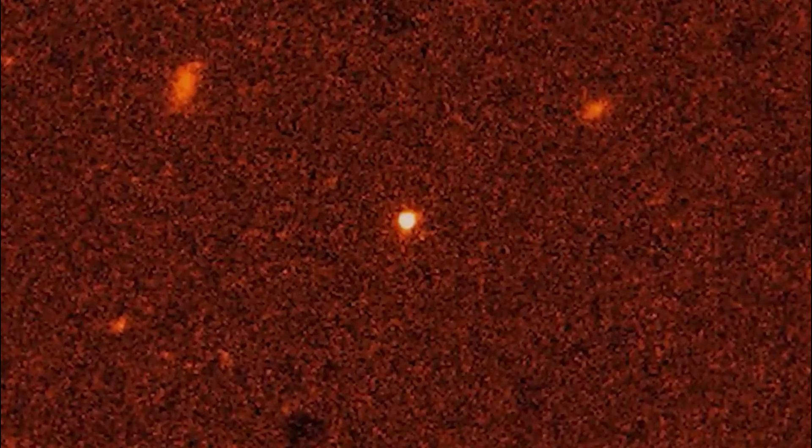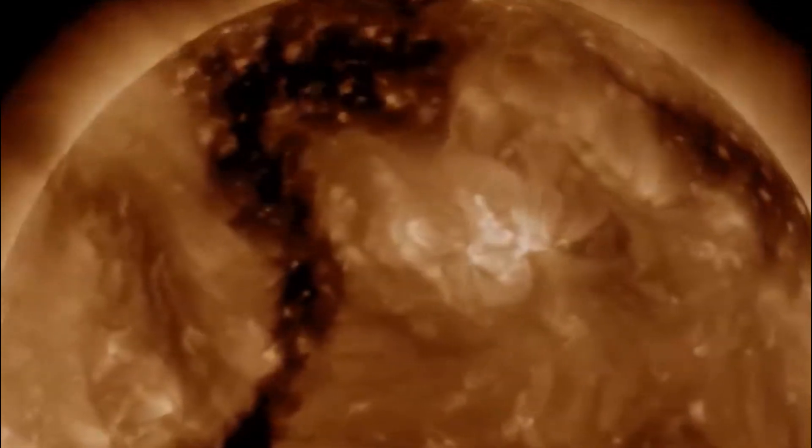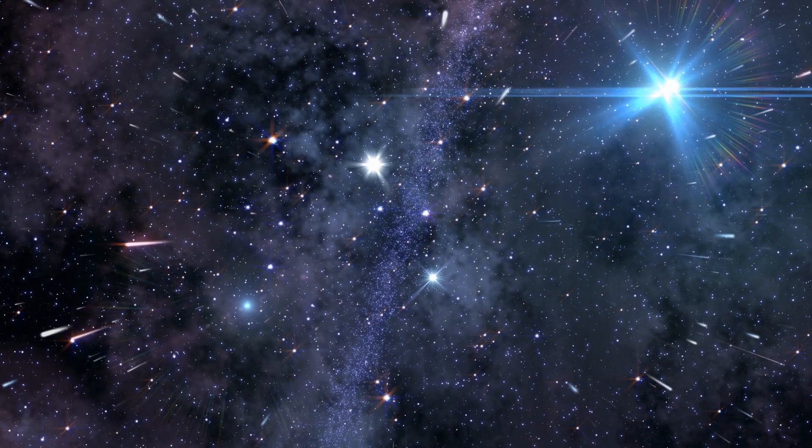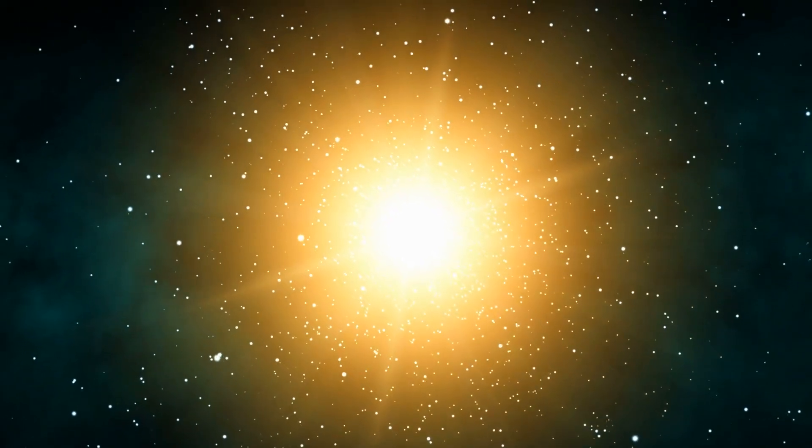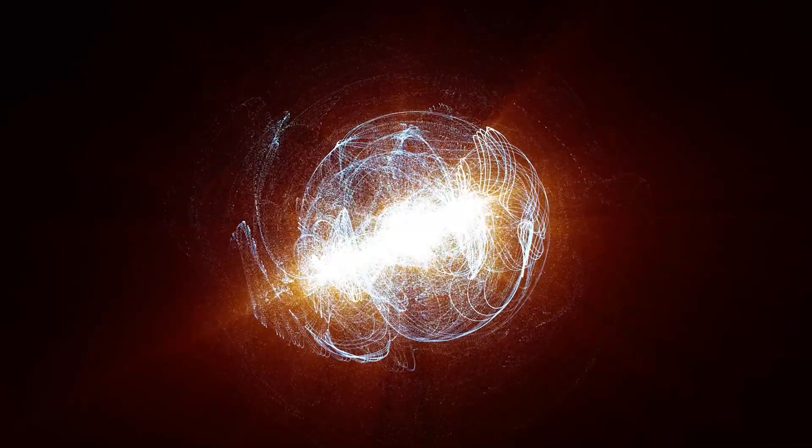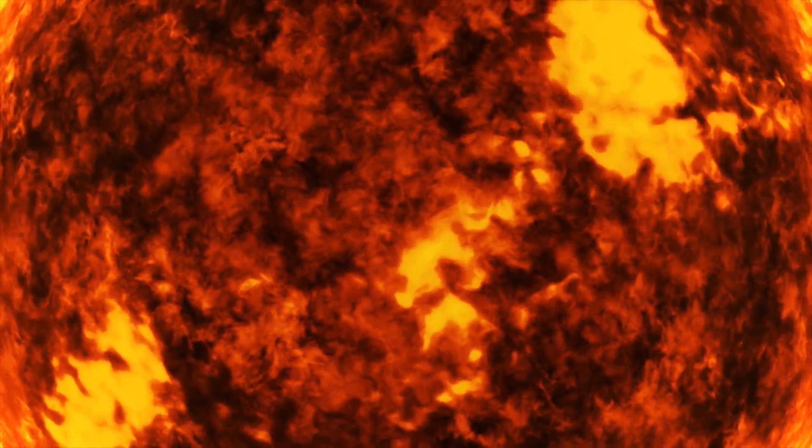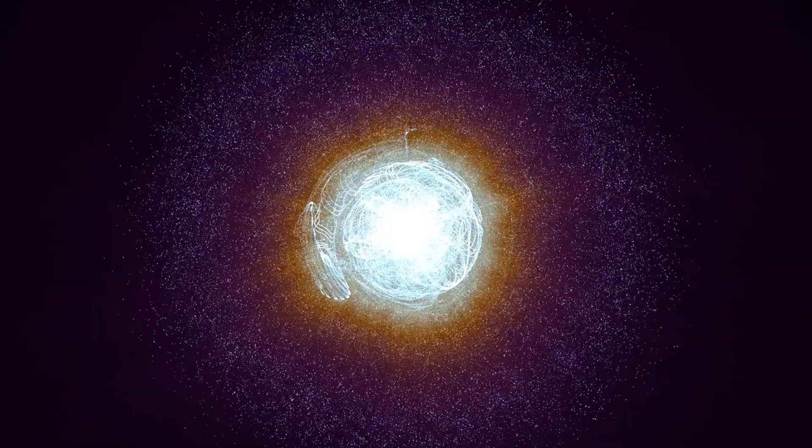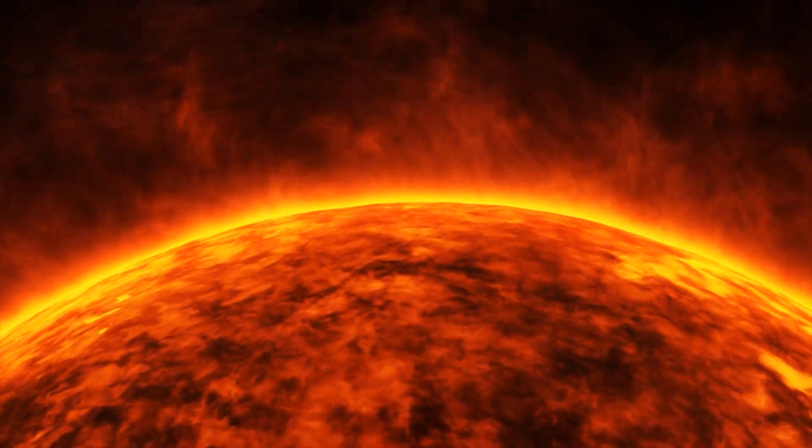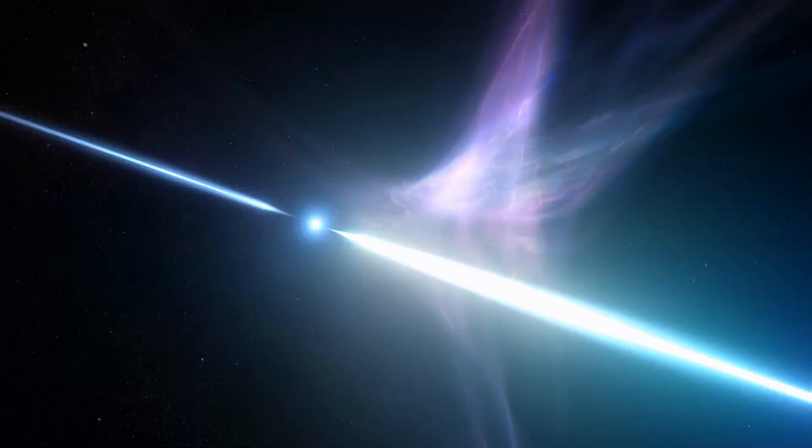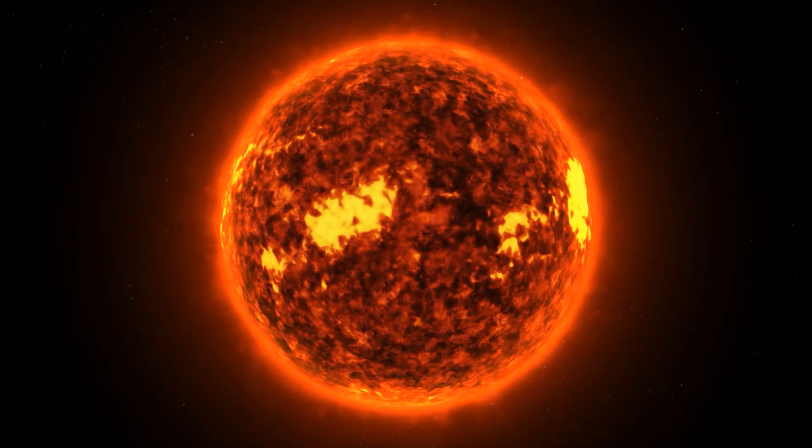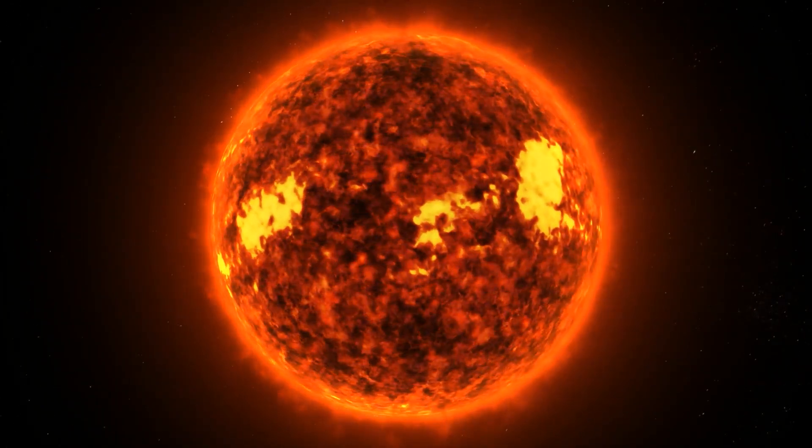Within stars like Betelgeuse, a fascinating process called stellar convection takes place, playing a pivotal role in regulating the star's internal dynamics. Stellar convection orchestrates the movement of matter within the star, ensuring a delicate balance between its core's energy generation and the radiant output from its surface. At the star's core, where nuclear fusion generates immense heat, the surrounding material becomes hotter and less dense. This heated material expands and becomes buoyant, rising towards the star's surface. Meanwhile, cooler material from the star's surface begins to descend towards the core. This continuous interplay between rising hot material and sinking cool material creates convection currents, a dynamic flow resembling a celestial conveyor belt.